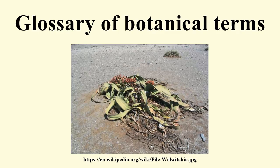Actin-: a prefix that indicates a radial form. Actinodromous: palmate or radially arranged venation with three or more primary veins arising from at or near the base of the leaf, the primary veins reaching the margin or not.